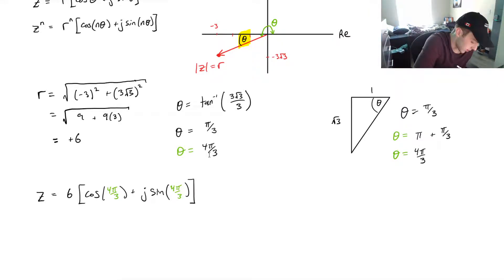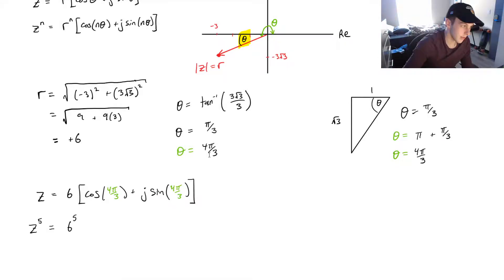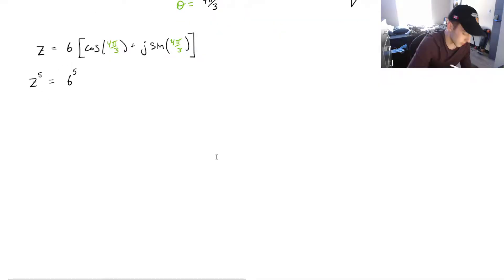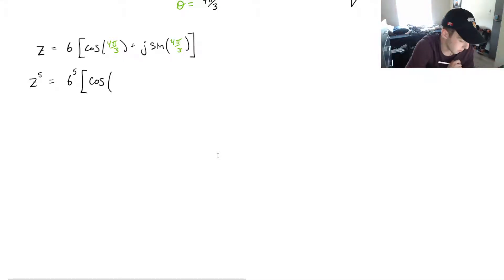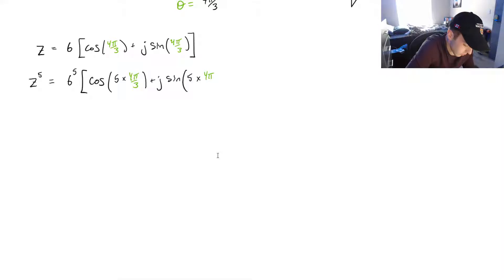Using De Moivre's theorem, if we raise that to the 5th power, the modulus will be raised to the 5th power — 6 times 6 times 6 times 6 times 6, that's 6 to the 5 — and we multiply the argument by 5. So we get 6^5 times (cos(5 × 4π/3) + j sin(5 × 4π/3)).